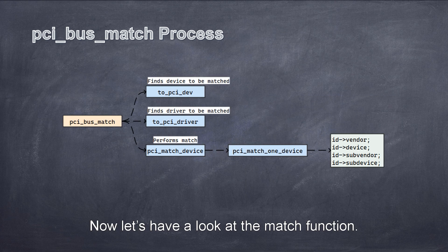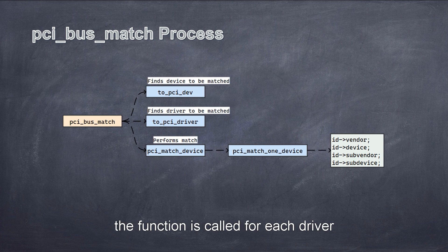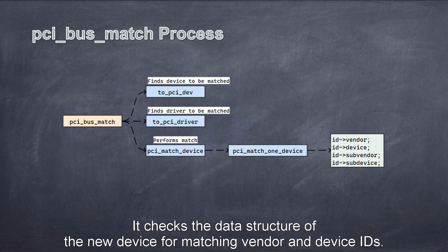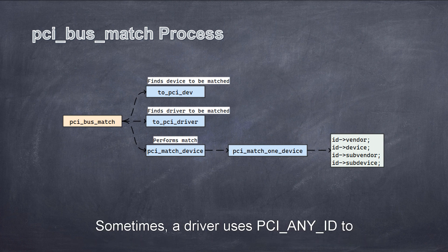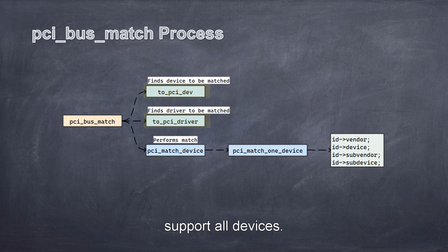Now, let's have a look at the match function. When a new device is registered, the function is called for each driver connected to the bus. It checks the data structure of the new device for matching vendor and device IDs. Sometimes, a driver uses PCI_ANY_ID to support all devices. After a device and a driver get matched, the device probe function is called to initialize the device.